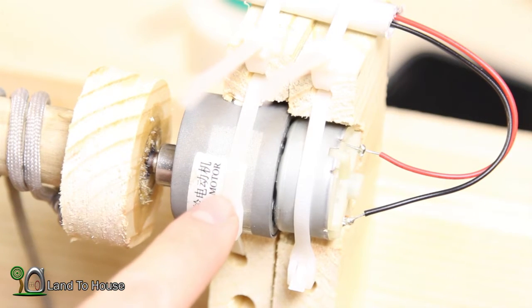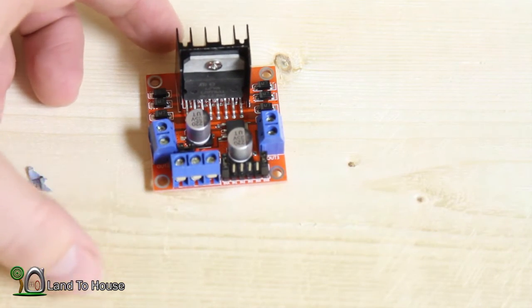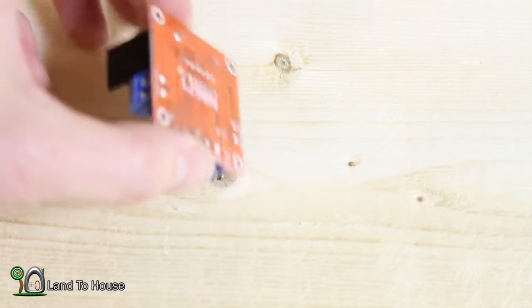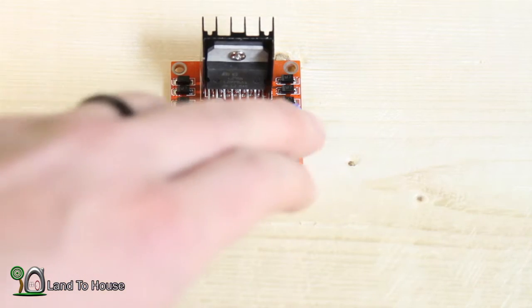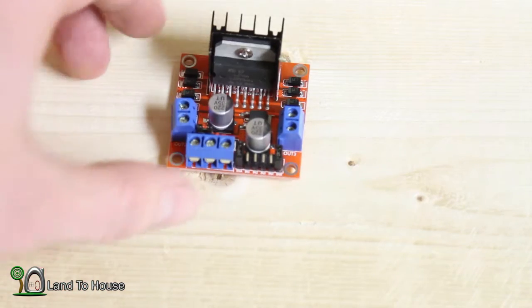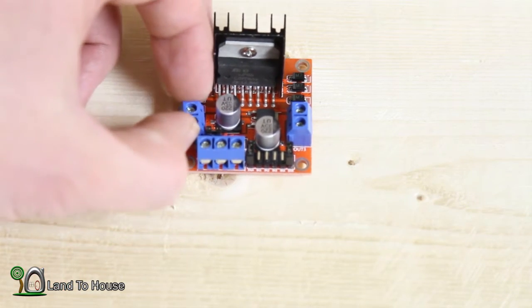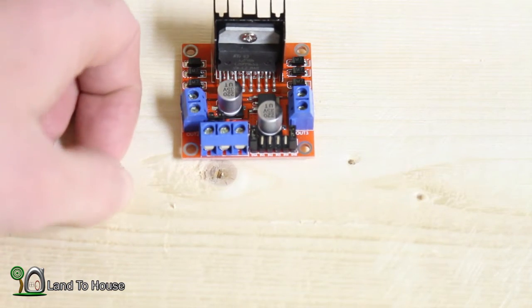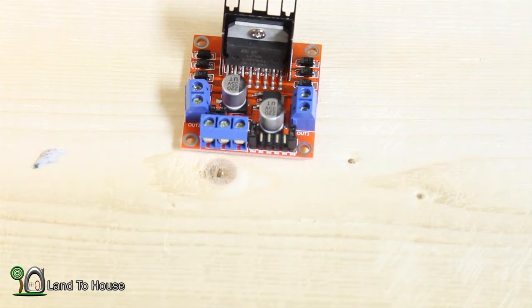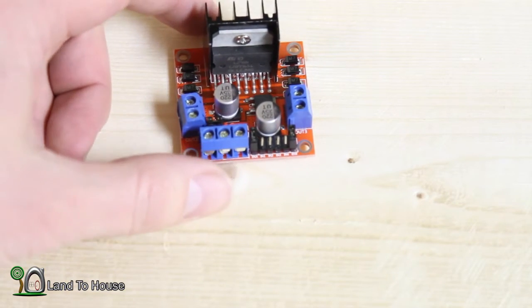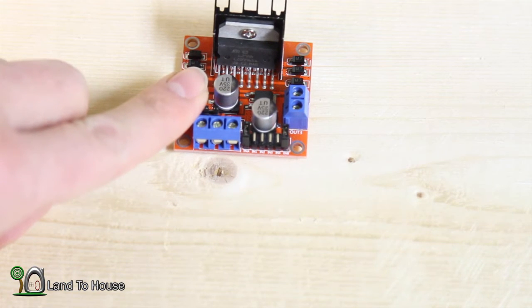The next component is the L298N and this is a motor controller. What this does, technically it's a dual H-bridge, which means that the outputs here can run two different motors in either direction. So in our case it's up and down on the motor. Without this you can only go one direction and it does take up to 35 volts I believe. Now one thing I need to mention: when this is running at 2 amps it has about a 5 volt voltage drop.